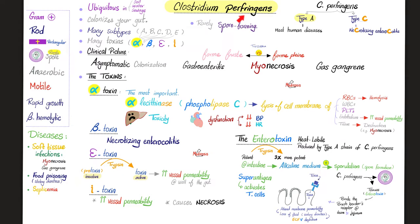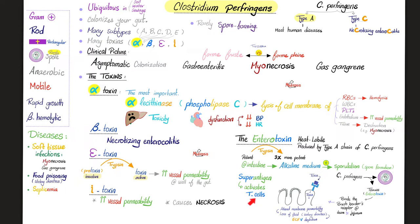Diseases caused by Clostridium perfringens include soft tissue infections such as myositis, myonecrosis, and gas gangrene, as well as food poisoning, watery diarrhea, and necrotizing enterocolitis with bloody diarrhea. Septicemia can happen as well. The myonecrosis and gas gangrene were caused by the alpha toxin, which is a lecithinase or phospholipase. The watery diarrhea is caused by the heat-labile enterotoxin. It is potent, but your trypsin will make it three times more potent. Your intestinal environment is alkaline, which boosts sporulation. While the bacteria is forming a spore, it releases those toxins, which bind the brush border receptors in your intestine, causing altered membrane function and permeability, loss of fluid, watery diarrhea, and volume depletion. Moreover, this enterotoxin can act as a superantigen, activating your T lymphocytes tremendously.